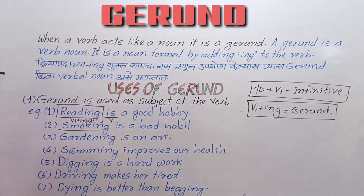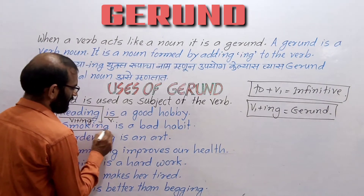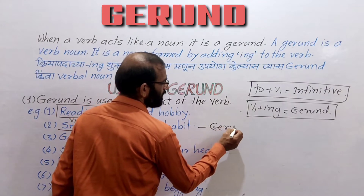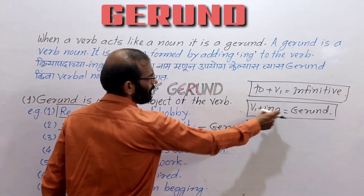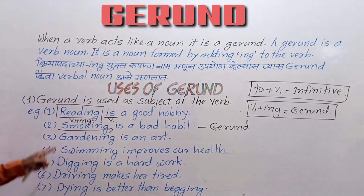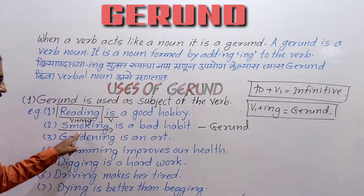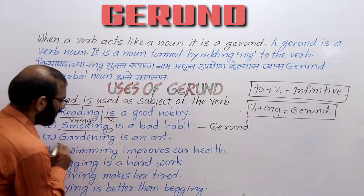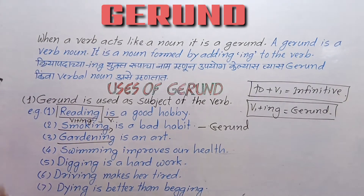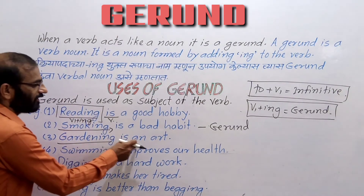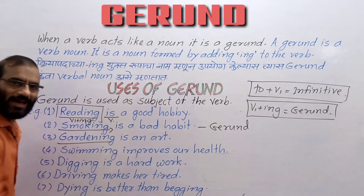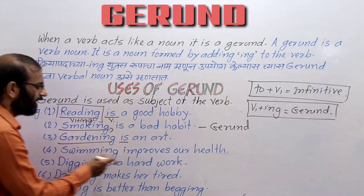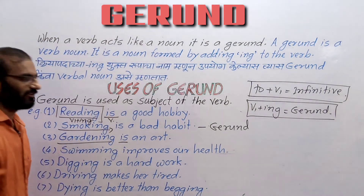Smoking is gerund — it is a verbal noun formed by V1 plus ING. Here 'smoking' is used as the subject of the verb 'is.' Similarly, 'gardening is an art' — here gardening is used as subject of the verb 'is.' So this is gerund.